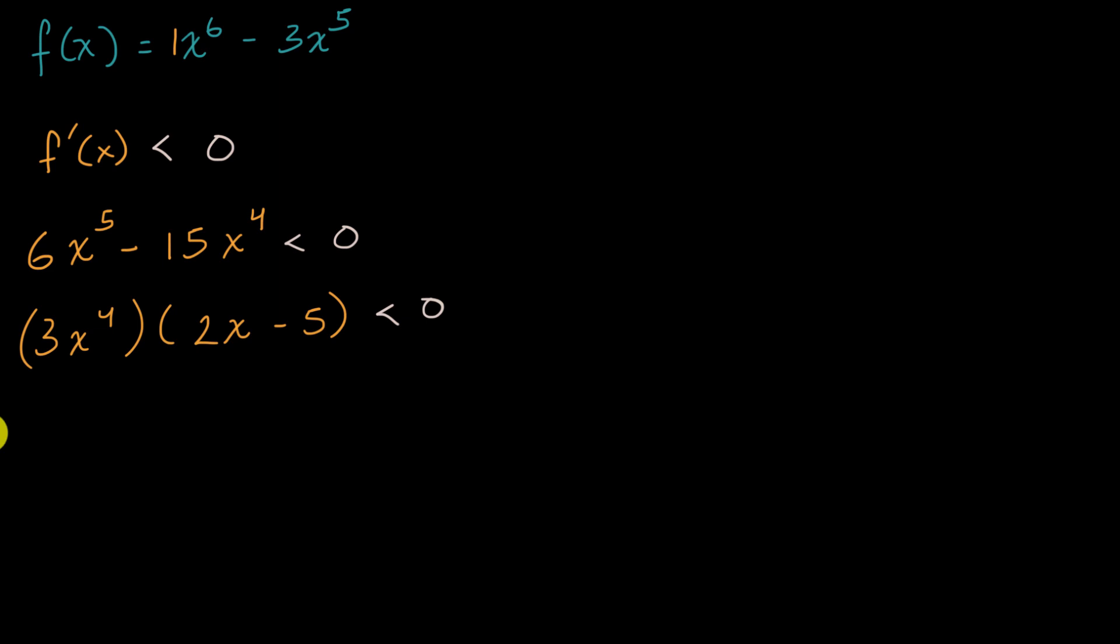So we have two situations. So we could say either 3x to the fourth is greater than zero, and 2x minus 5 is less than zero. So that's one situation. Or, 3x to the fourth is less than zero, and 2x minus 5 is greater than zero.